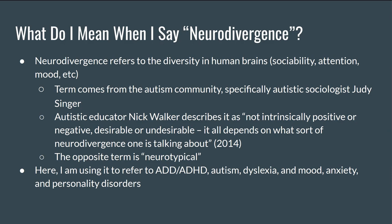These models are helpful to keep in mind when we think about the concept of neurodivergence. Neurodivergence refers to the diversity in human brains, sociability, attention, mood, and other variations in human thought and behavior. The term comes from the autism community, specifically autistic sociologist Judy Singer, who created the term in the late 1990s. For a while, it was mainly used to describe autistic folks and highlight that autistic brains don't function abnormally, but differently.